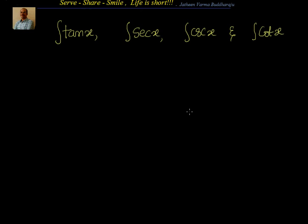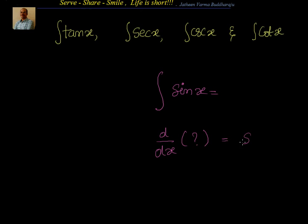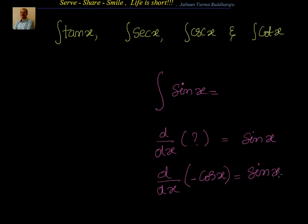Before that, let me step back a little bit and recap how we found the integral of sin x and cos x. Integration is nothing but anti-differentiation. To find the integral of sin x, we need a function whose derivative is sin x. We know the derivative of cos x is minus sin x, so d/dx of minus cos x equals sin x. That means the integral of sin x is minus cos x plus c. Similarly, the integral of cos x is sin x plus c, because the derivative of sin x is cos x.